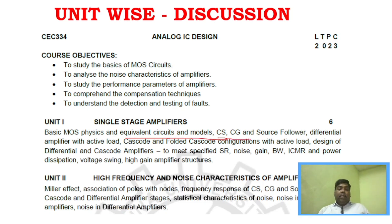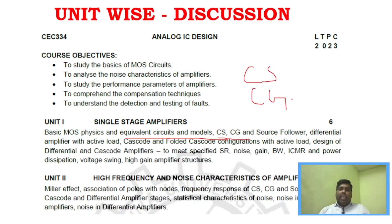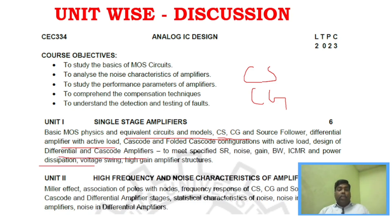In Unit 1, under equivalent circuit models, common source and common gate amplifiers are very important, including cascode and folded cascode configurations with active load. You must study the working, derivations, and parameters such as input resistance and gain. Differential amplifier with active loads, power dissipation, and design of differential and cascode amplifiers are all very important areas in Unit 1.